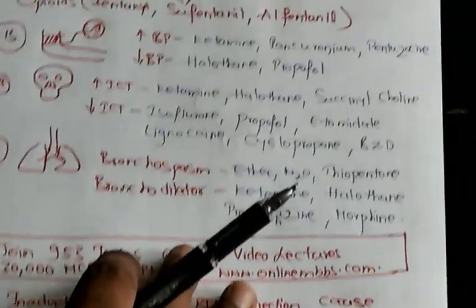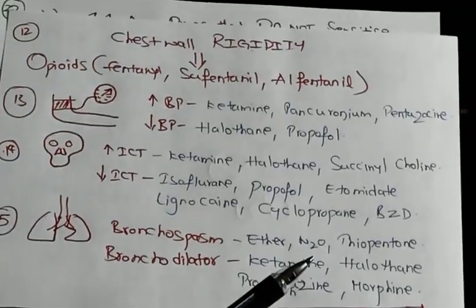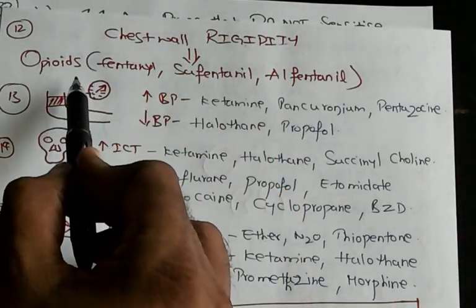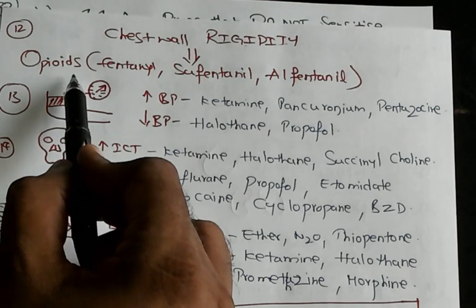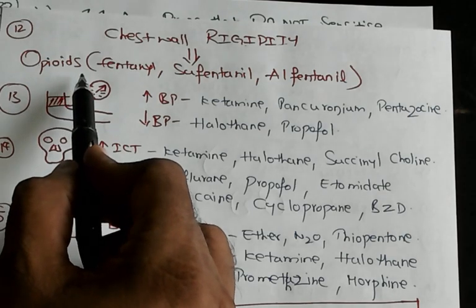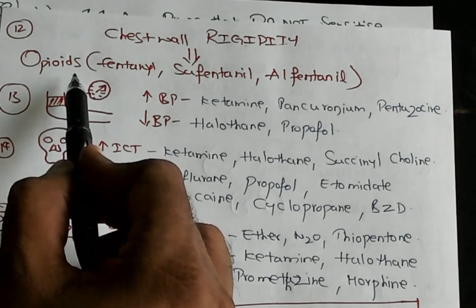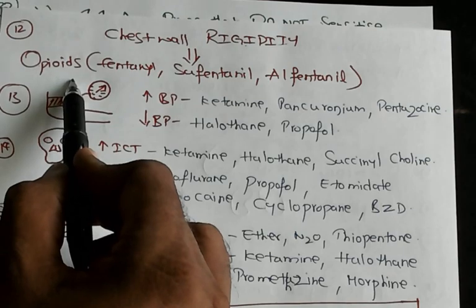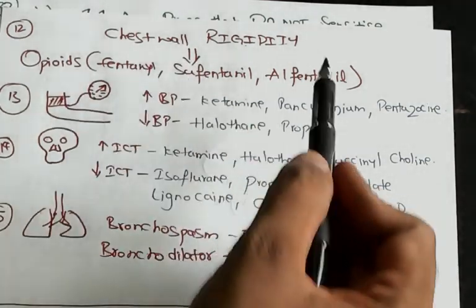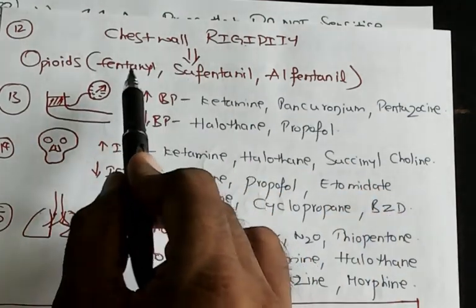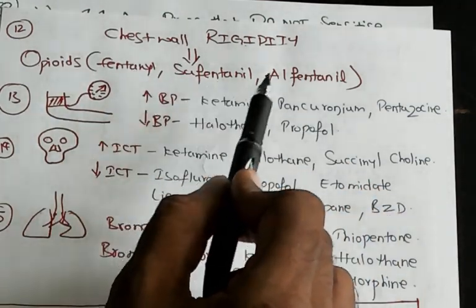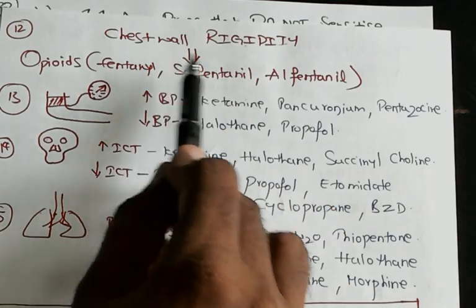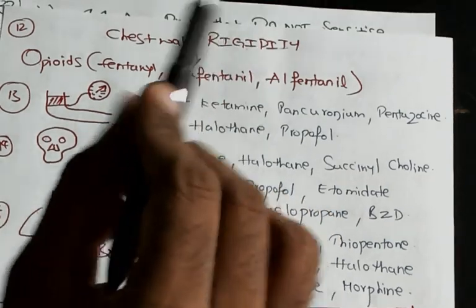If we talk about chest wall rigidity, you should think of opioids — all opioids. Fentanyl, sufentanil, and alfentanil all lead to chest wall rigidity.